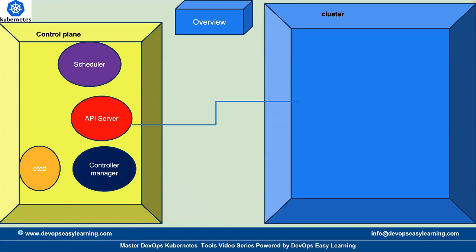In reality, the controller manager, the scheduler, and etcd don't talk directly with the cluster. Even as a human, when you are communicating, you don't communicate directly with the cluster — you communicate with the API server, and the API server is the one that sends your request inside the cluster. So to summarize, the control plane controls the cluster and has four important elements: etcd, controller manager, API server, and scheduler.